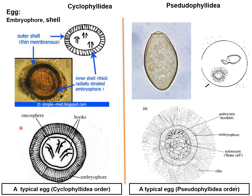The embryophore is encircled by another layer known as the capsule or egg shell. Based on the embryophore characteristics we can differentiate the eggs of cyclophyllidean and pseudophyllidean cestodes. In cyclophyllidean parasites the embryophore is striated, whereas in pseudophyllidean parasites the embryophore is ciliated. Due to this ciliated structure, the ciliated embryophore is also known as a coracidium.